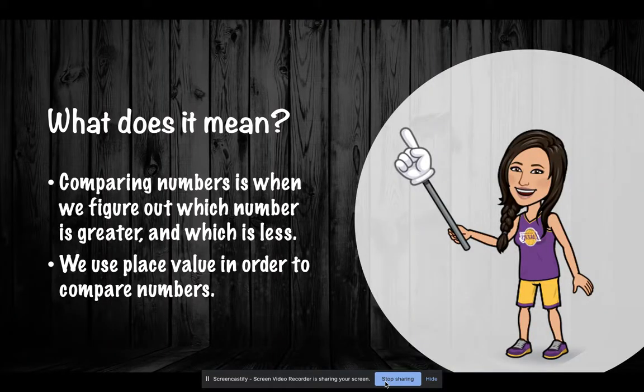So what does this mean? Comparing numbers is where we figure out which number is greater and which is less, and we use place value in order to compare the numbers.